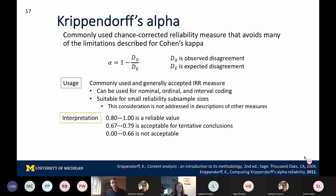Krippendorff's Alpha is another chance-corrected agreement measure that avoids many of those limitations that require different extensions for Cohen's Kappa. The formula in the literature for Krippendorff's Alpha looks a bit different than the other chance-corrected agreement measures, but it is conceptually the same — it's just typically represented in terms of disagreements rather than agreements. It's a commonly used and generally accepted IRR measure, suitable for a variety of types of data analysis, and it's also suitable for small reliability subsample sizes.